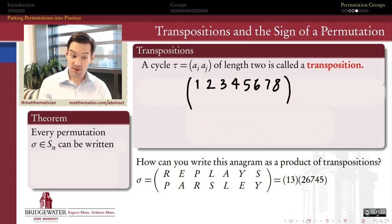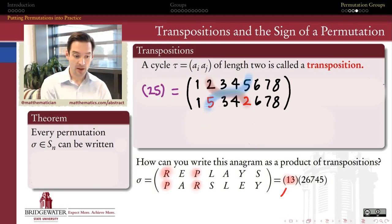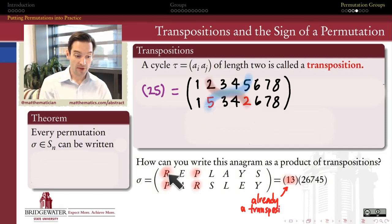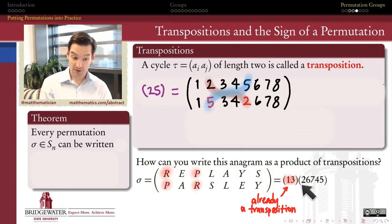Here's an example of a transposition. In the symmetric group on eight symbols, if I take position two and position five and flip-flop them, I get a cycle of length two called the transposition (2 5). And the transposition (1 3) was a portion of the cycle notation that turned 'replays' into 'parsley' inside of S_7. So let's see if we can figure out how to write this entire permutation as a product of transpositions — cycles of length two.